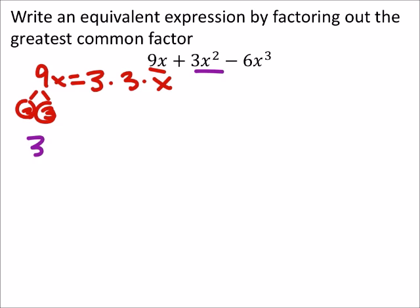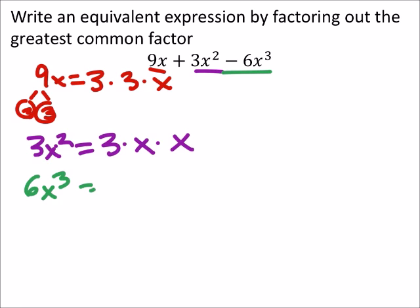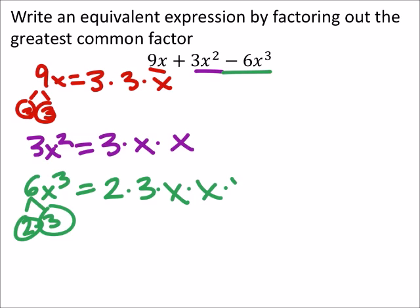Then we've got 3x squared. 3 is already prime, so we've got 3 times x times x. And finally, we've got this 6x cubed, which would split the 6 up into 2 and 3. So, we've got 2 times 3 times x times x times x.